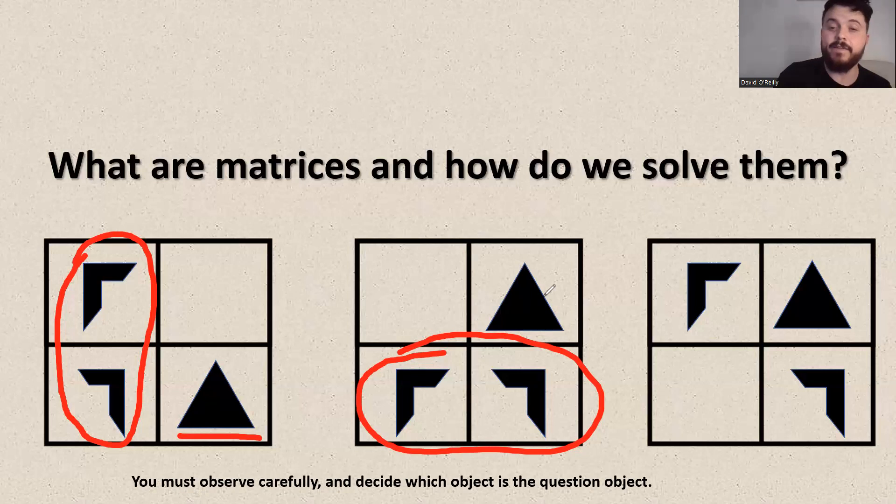And in the third one, once again, these two are very much alike. So we want to find out how they've changed and therefore find out what the answer would be in respect to this triangle. So once again, we can see this is working from top to bottom. This is working from left to right, and this is working diagonally. And that's important to remember because with matrices, they can work in any way.